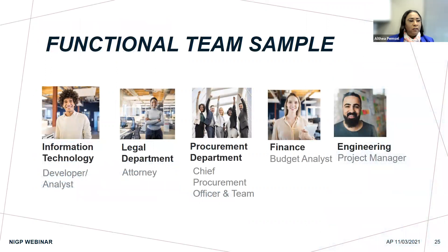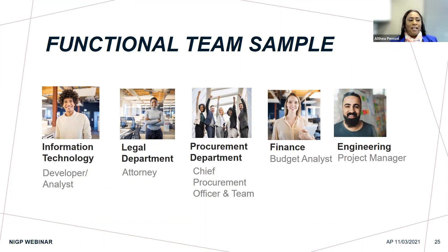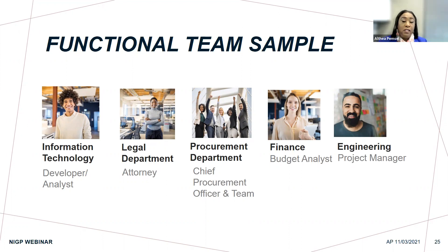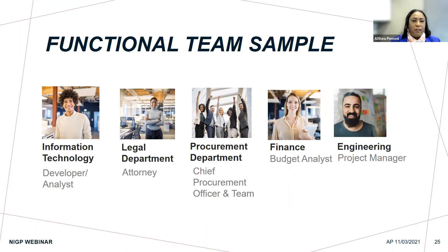Functional team — this is a great example of what a functional team should look like. These team members are not always part of every process — they go in and out. We may start with finance initially to help gather funds. Engineering will probably always be part of it. Legal will help on the contract side of things. The procurement department is there from start to finish. Also, information technology — because sometimes there are IT pieces that get left out. The building's built and then IT says, 'We didn't know you wanted this or that.' Always bring them to the table first.